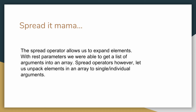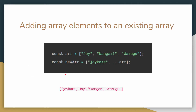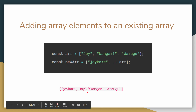We'll directly look at the use cases of the spread operators. The first one is adding array elements to an existing array. Here we have an array called arr which has three elements: 'joy', 'vengari', and 'varugu'. Then we have a second array which has one element, and inside it we are copying another array after its existing elements. When you place three dots in front of an array inside square brackets, it takes out the content of the array one by one and stores it inside another array as individual elements. So the final contents of the new array are 'joycat', 'joy', 'vengari', and 'varugu'.